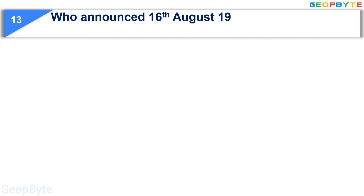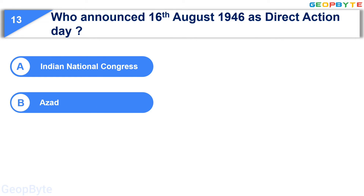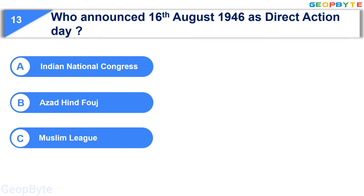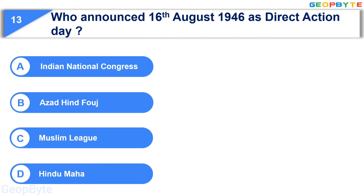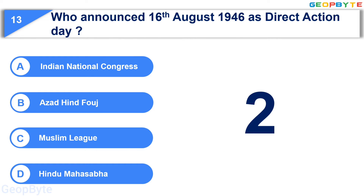Moving to the thirteenth question: who announced 16th August 1946 as Direct Action Day? Option A: Indian National Congress, Option B: Azad Hind Fauj, Option C: Muslim League, Option D: Hindu Mahasabha. Your time starts now. Your time is up and the correct answer is Option C: Muslim League.